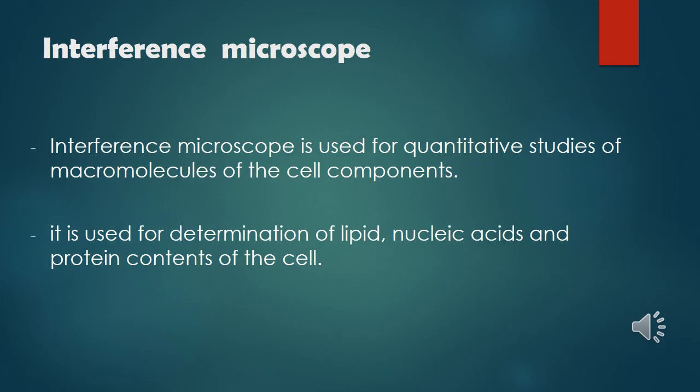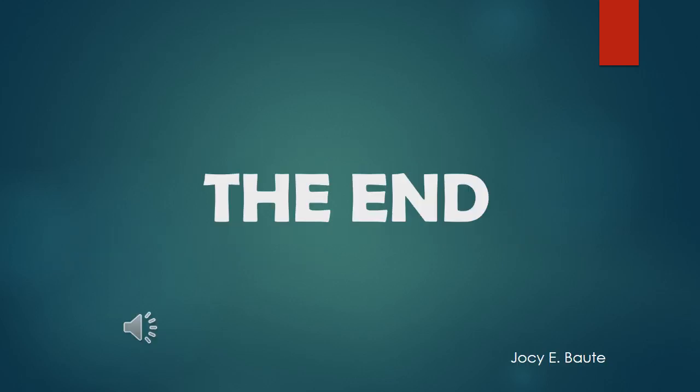The Interference Microscope is used for quantitative studies of macromolecules of the cell components. It is used for determination of lipid, nucleic acids, and protein contents of the cell. And those are the five important types of microscopes used in biology.